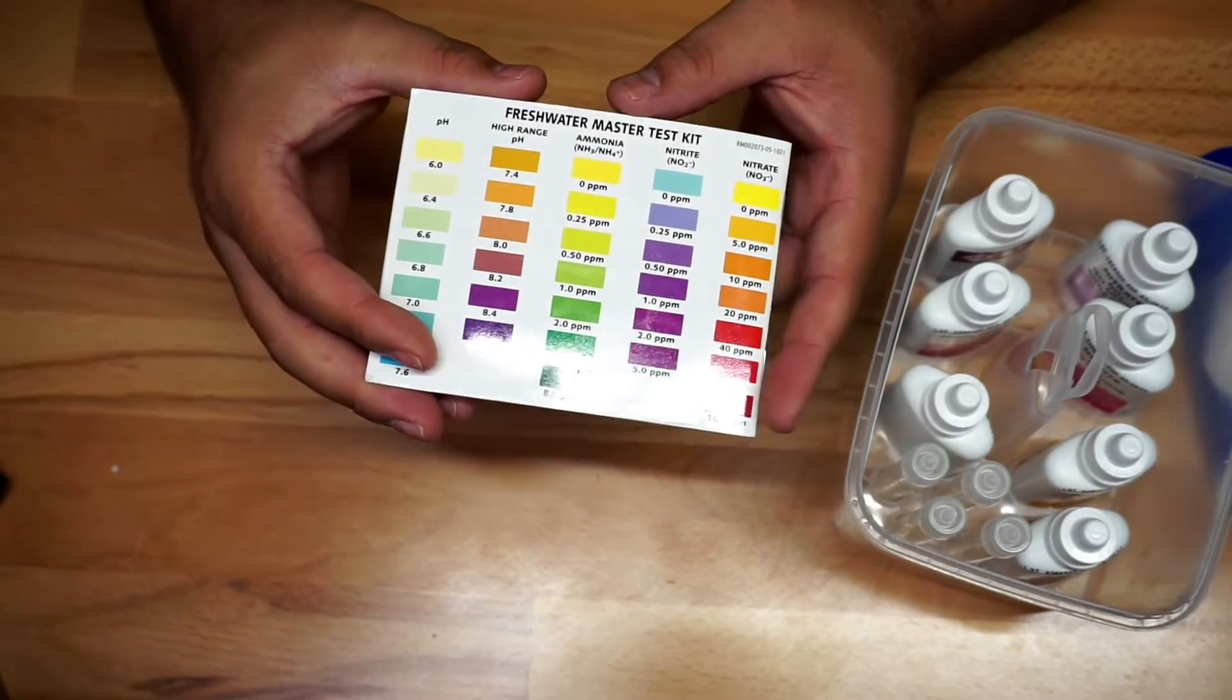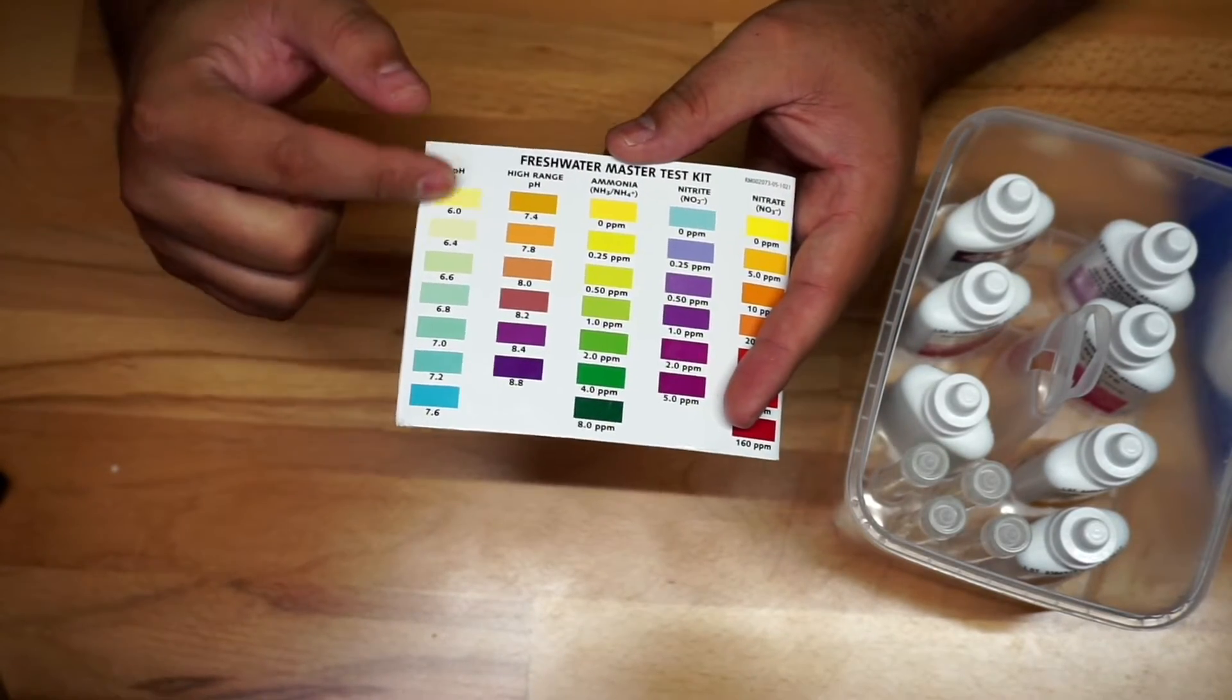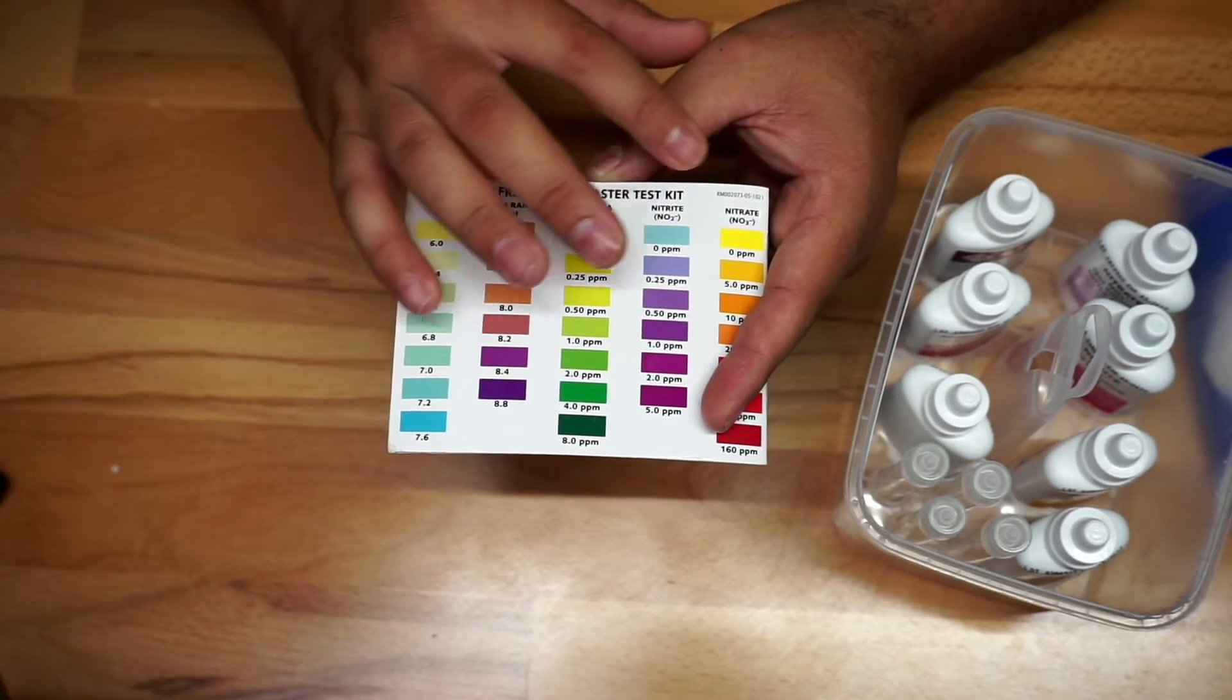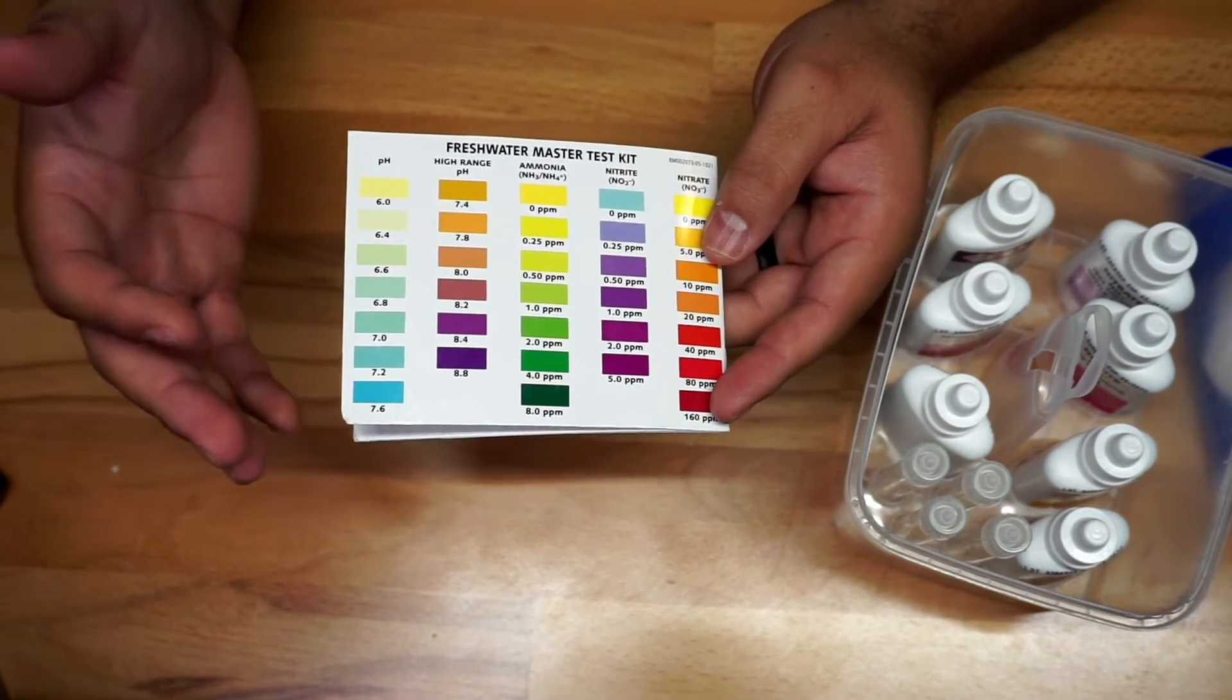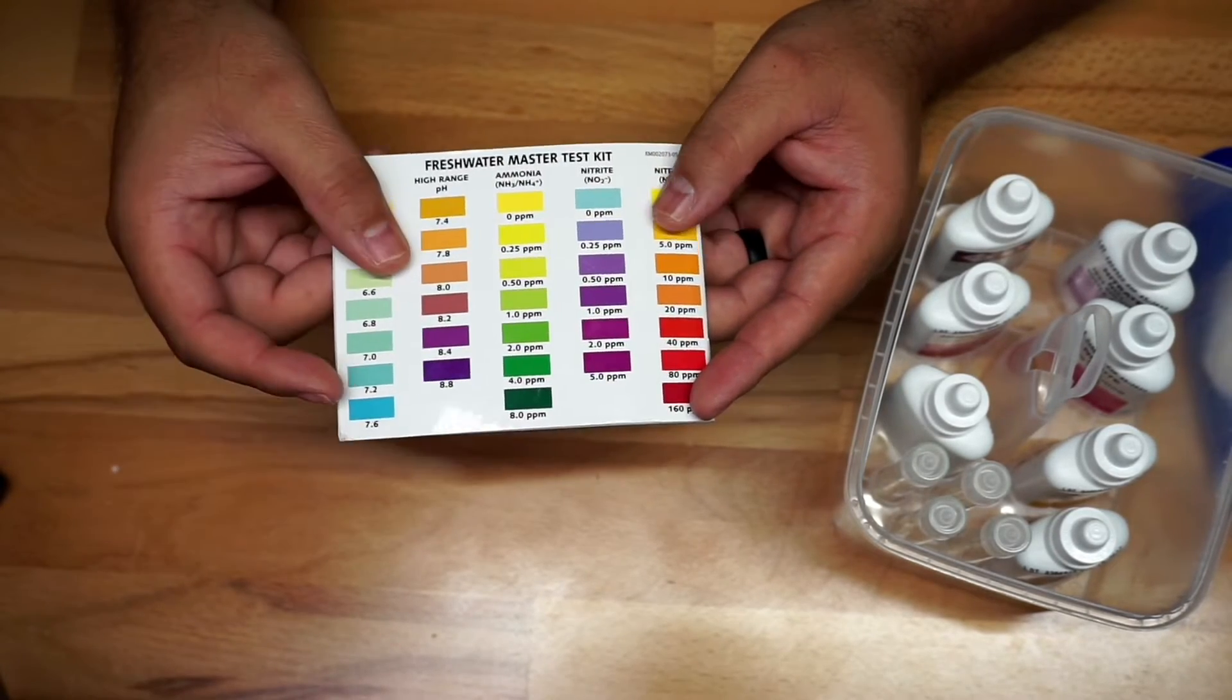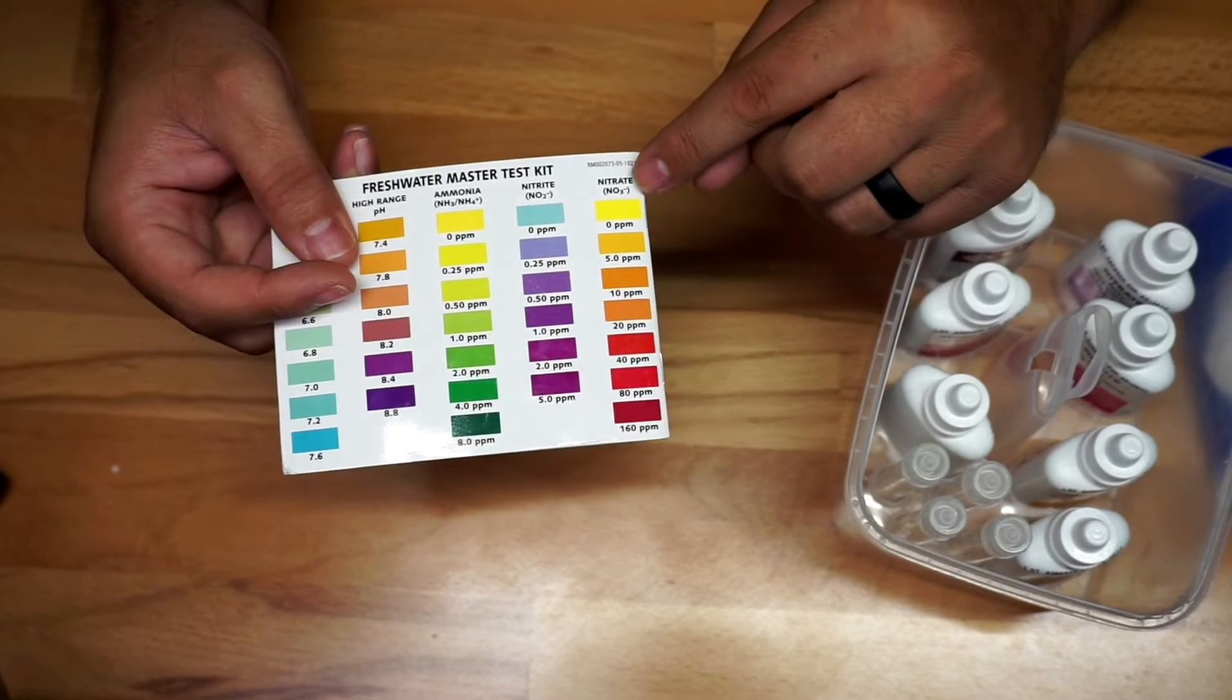Everything is going to be here in instructions and then you can see the color chart right here. You could see the pH, you could see the ammonia and the nitrates. It's going to give you an idea if you have an ammonia spike, your fish could potentially die depending on how much nitrate you have in your fish tank.